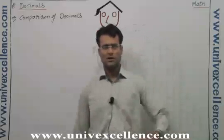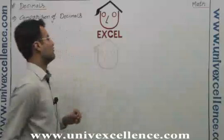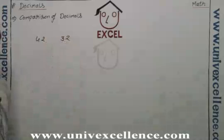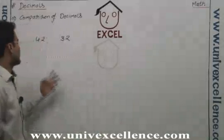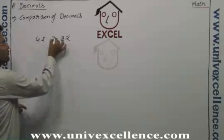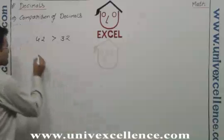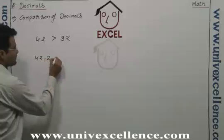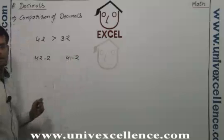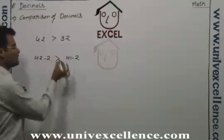We could say it's a large process — first convert them into fractions then compare — but we will not go to that. We will follow a very easy process. How do you compare 42 and 32? Which is the larger one? Obviously 4 is higher than 3, so 42 will be the greater one than 32. The same thing will be applied to decimals also. When you say 42.2 and 41.2, obviously 42 is the larger number, so you put the greater-than mark like this.